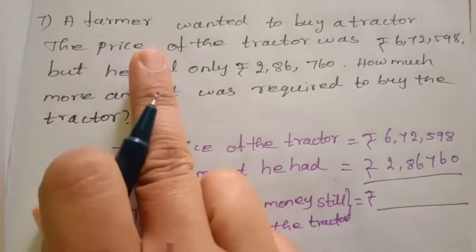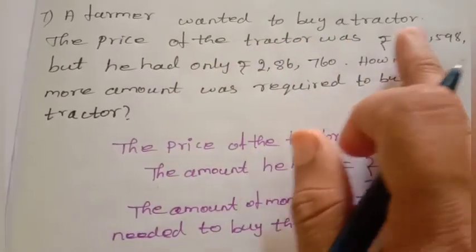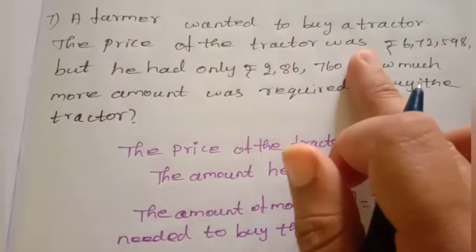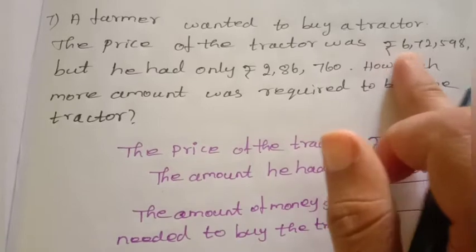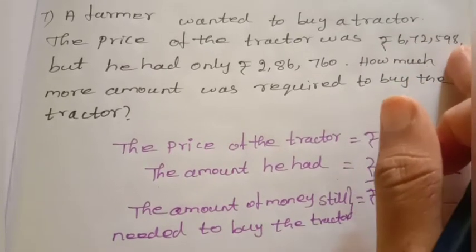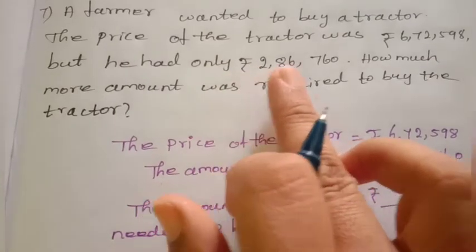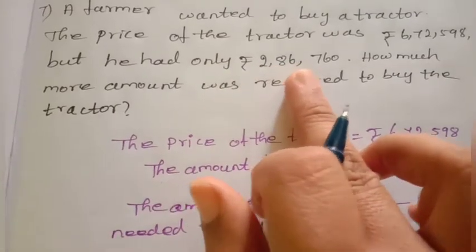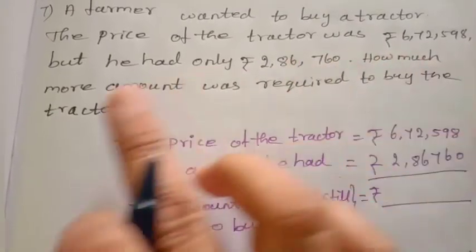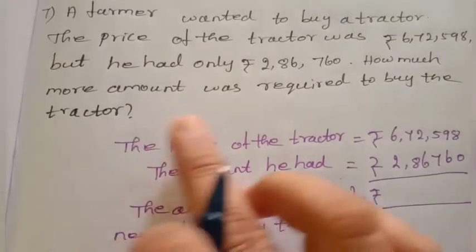Question 7: A farmer wanted to buy a tractor. The price of the tractor was Rs. 6,72,598, but he had only Rs. 2,86,760. How much more amount was required to buy the tractor?